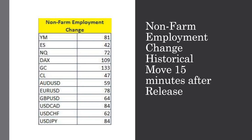This morning, we're doing the non-farm employment change. These are the historical moves measured 15 minutes after the release — these are averages. The Aussie dollar averages 59 pips, the euro dollar 78, the British pound dollar 64 pips, the USD CAD 84 pips, the USD Swiss franc 62, and the USD JPY 84 pips. There are differences in which ones I would want to trade.